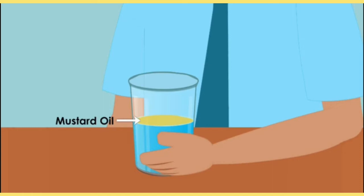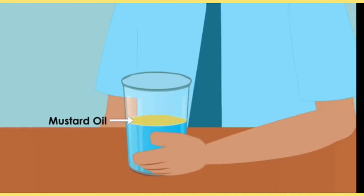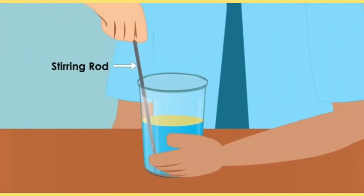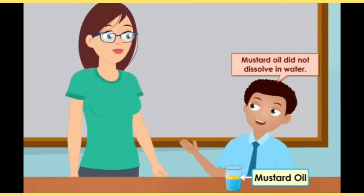When I was in the online class, we had these experiments live in the class, but you can do them yourself at home. In one glass tumbler you add ink, and in the other glass tumbler you add mustard oil. After stirring with a stirring rod, the result is that ink dissolves in water — the ink dissolves completely in the water.